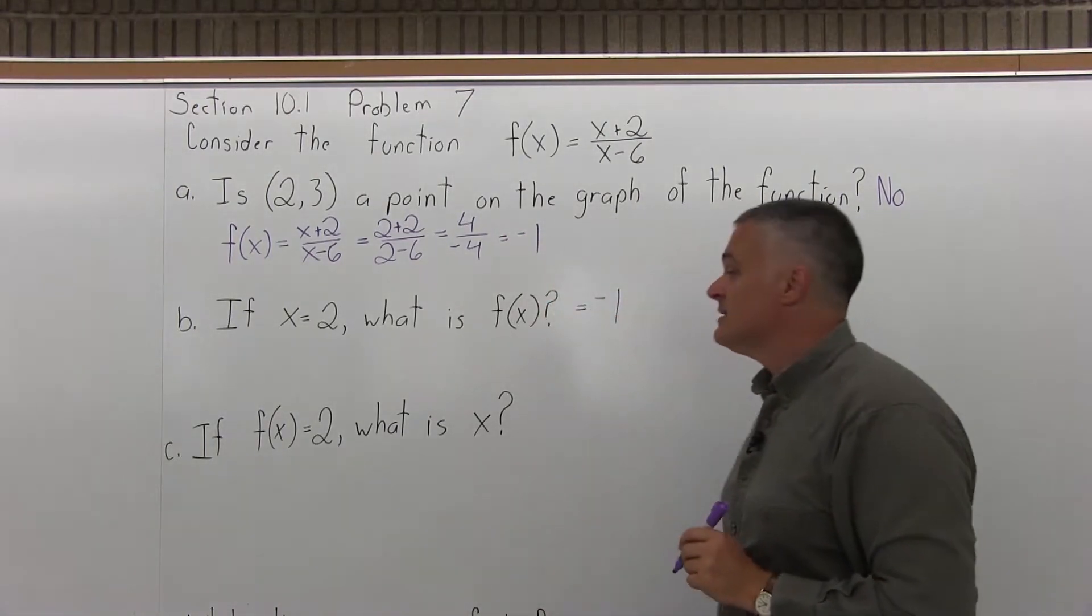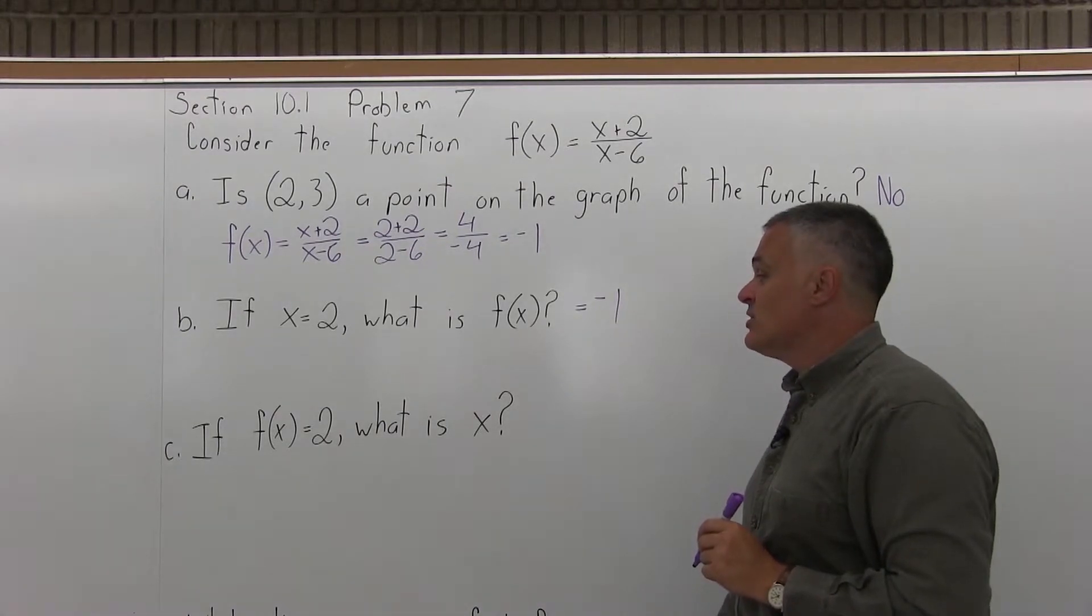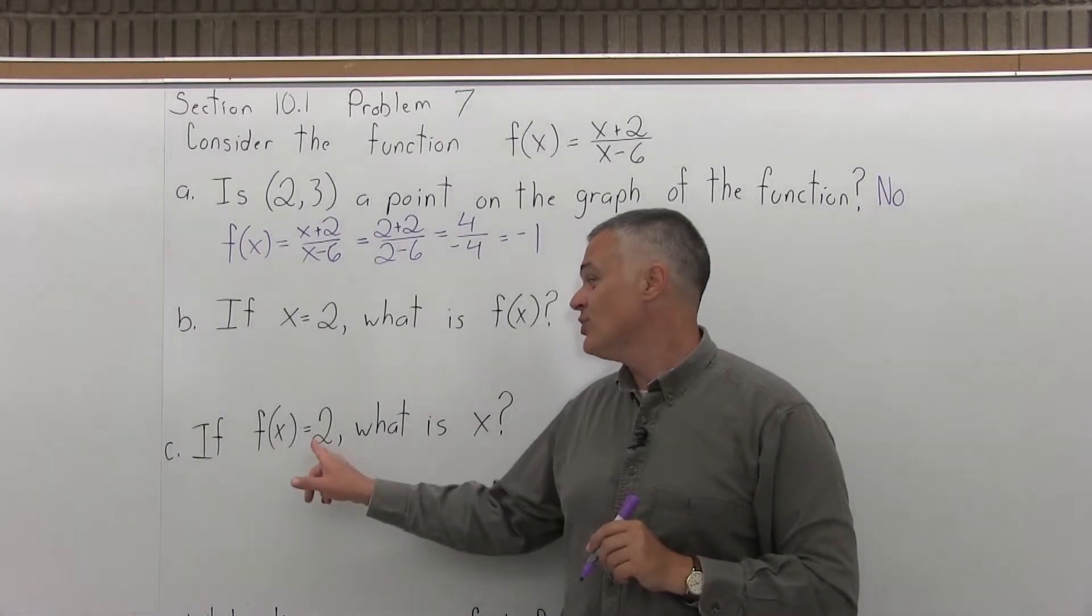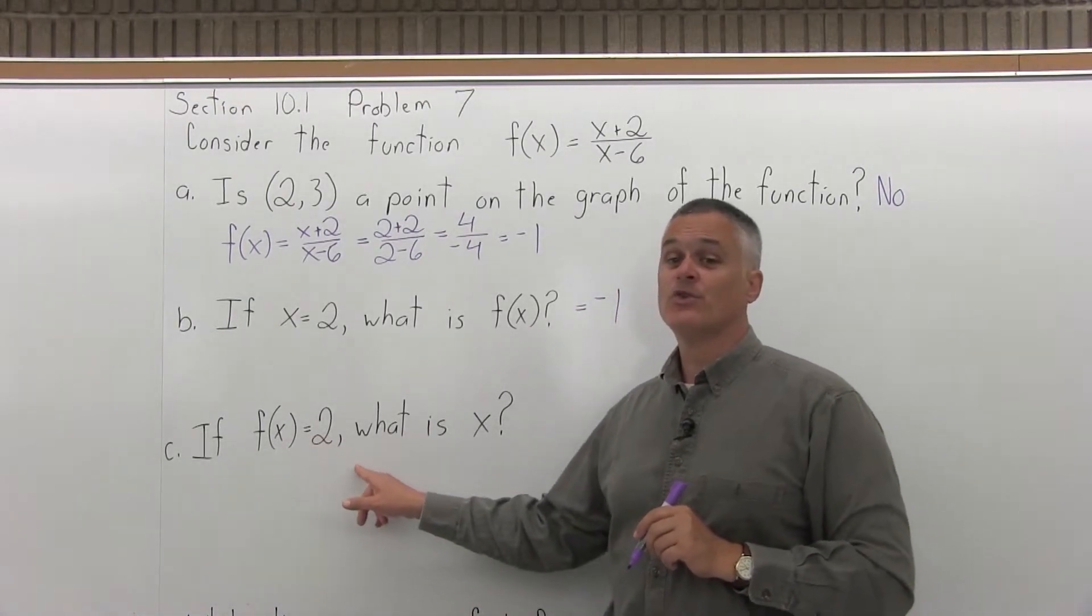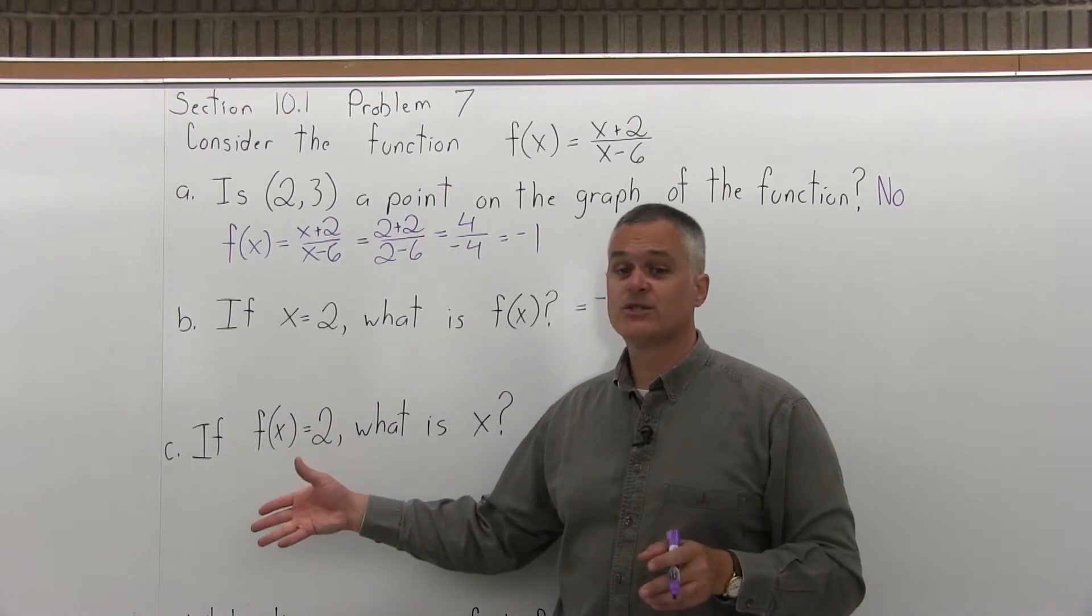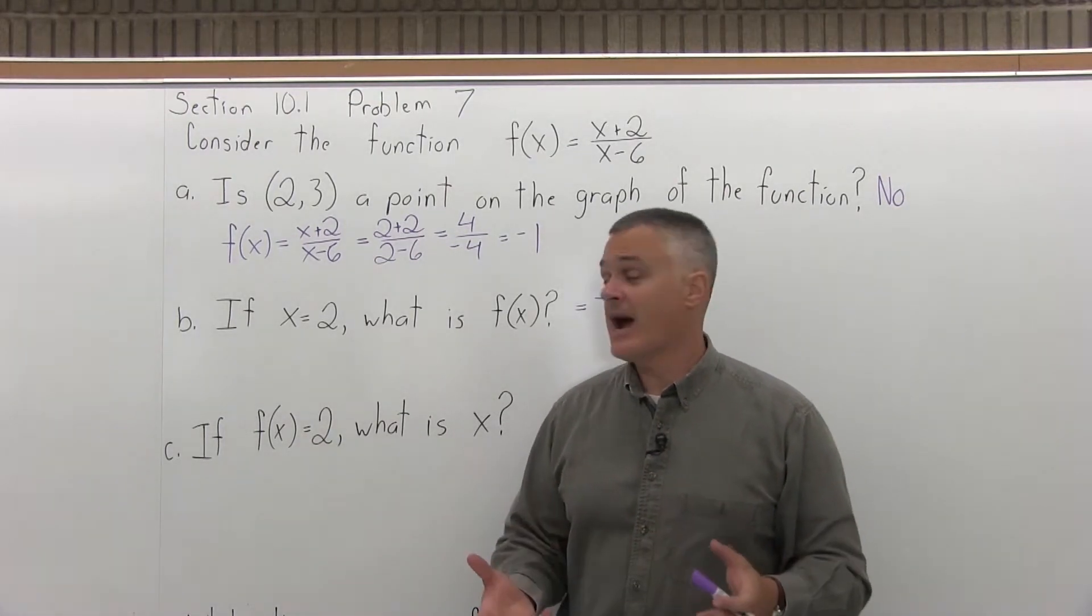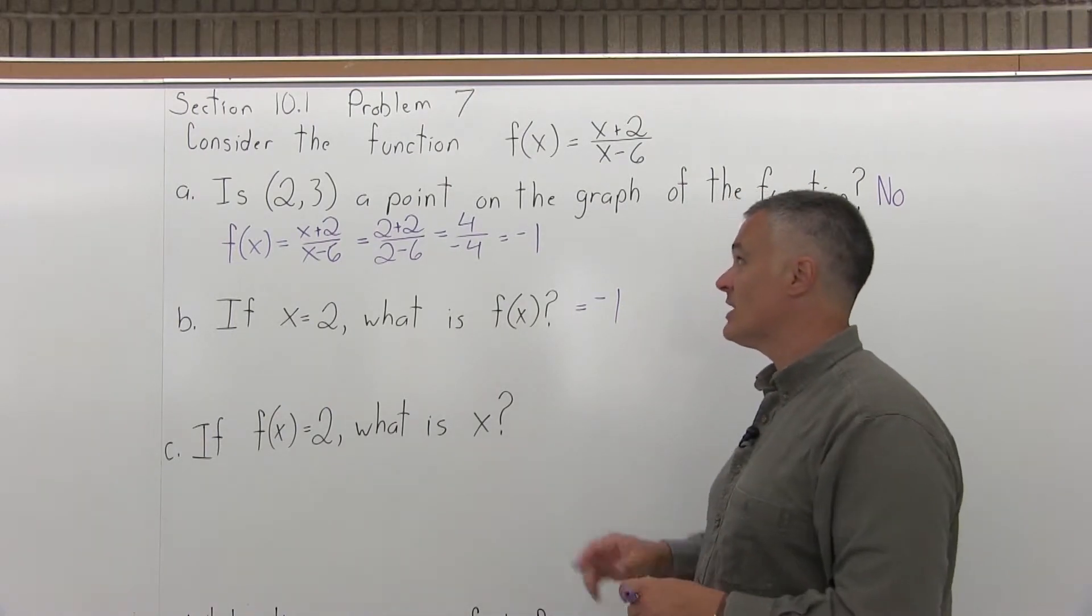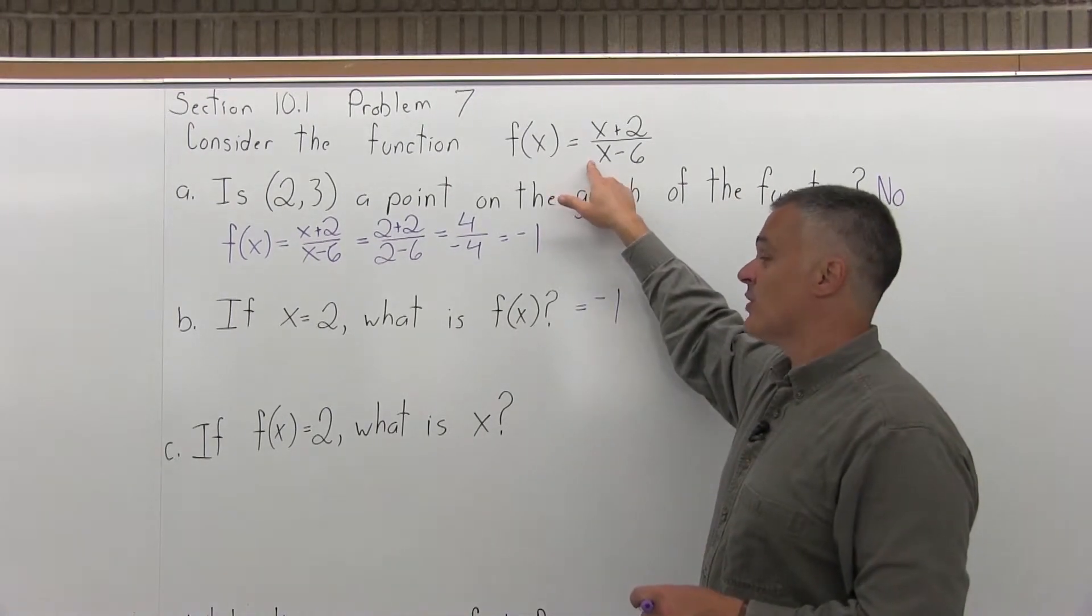Part C says if f(x) is 2, what is x? Now this sounds a lot like part B, but it's different. It's asking if you got out a 2, what did you put in? Or you could say if y is 2, what is x? If you could see the graph, you could just look and read it off. But it's not given. The function is given as an equation.